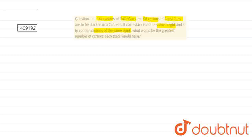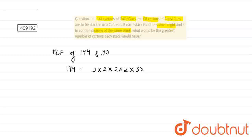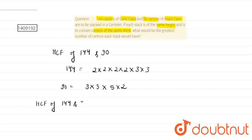So friends, to find the number of cartons required, we find the highest common factor of 144 and 90. First of all, the prime factorization of 144 is 2 × 2 × 2 × 2 × 3 × 3, and the prime factorization of 90 is 3 × 3 × 5 × 2. So the HCF of 144 and 90 is 3 × 3 × 2, which equals 18.